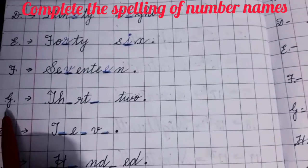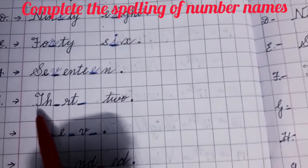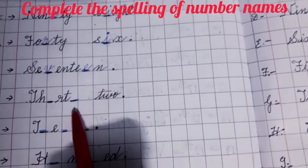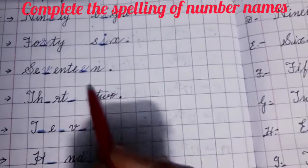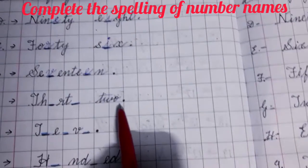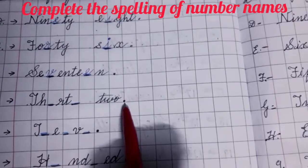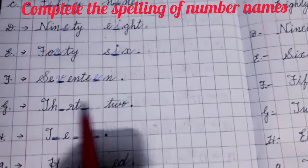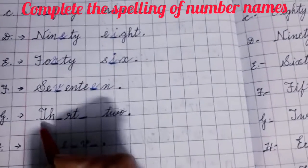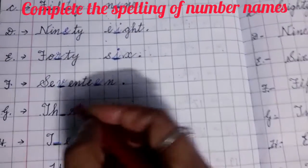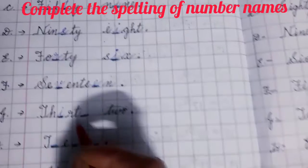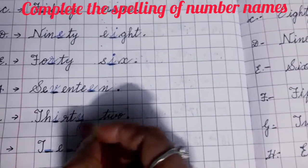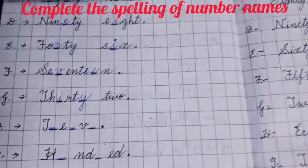Here you will write G and put an arrow. Write T H blank space R T blank space — then leave a block — then write T W O. So this is the spelling of 30 — 32. T H is already written, what you will fill here? You will fill in I. R is written, T is written, what you will fill here? You will fill in Y — THIRTY. 32 — THIRTY TWO.